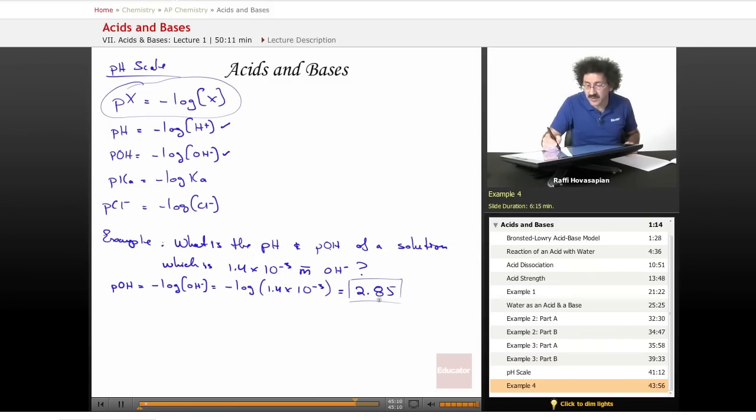So notice 2.85 is a much more attractive number than 1.4 times 10 to the negative 3. At least that's what many people think. I personally don't think so, but that's fine. You know, I'm a chemist, we deal with pHs, we'll deal with pHs.